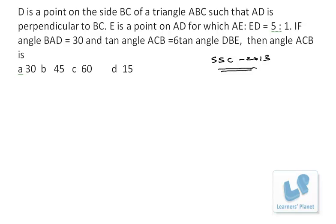Now friends, let's see this question from SSE paper 2013. D is a point on the side BC of a triangle ABC such that AD is perpendicular to BC. E is a point on AD for which AE:ED is 5:1. If angle BAD is 30 degrees and tan angle ACB is 6 tan angle DBE, then angle ACB is: